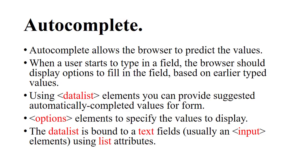Now, autocomplete. Autocomplete allows the browser to predict values when a user starts to type in a field. The browser displays options to fill in the field based on earlier typed values. Using the datalist element, you can provide suggested autocompleted values for form fields, with option elements used to specify the values to display.